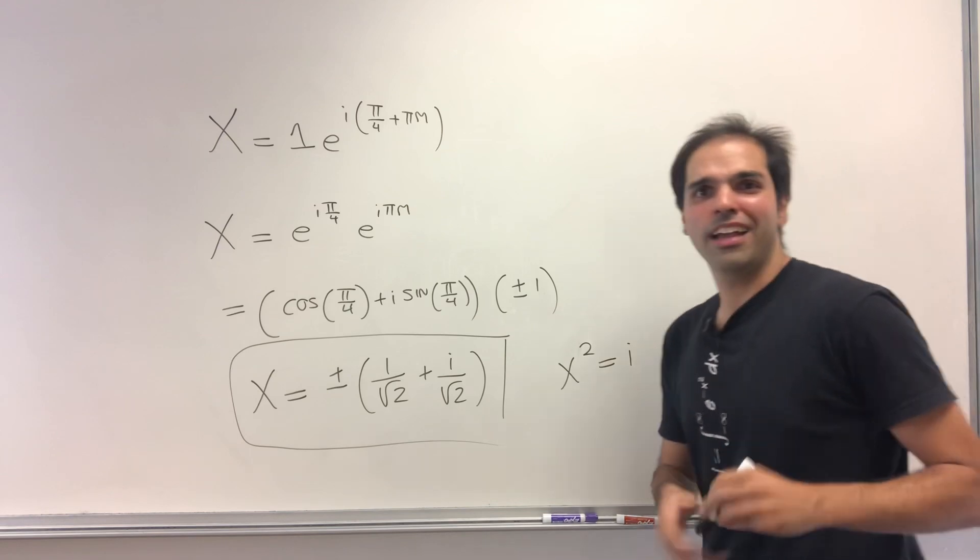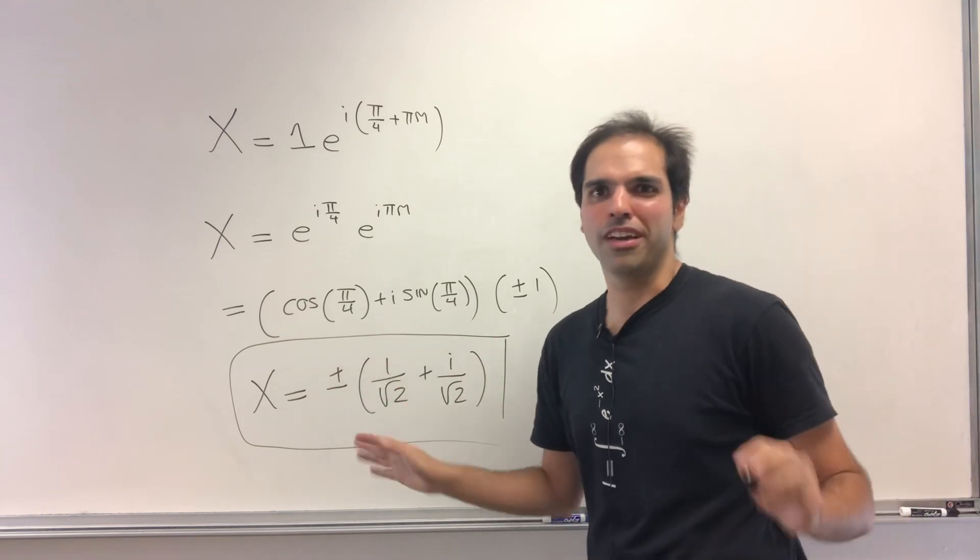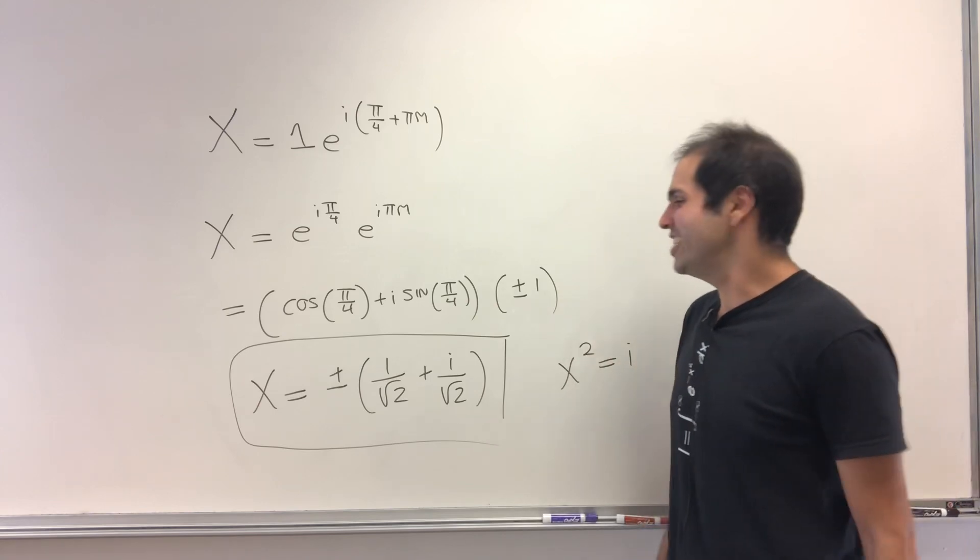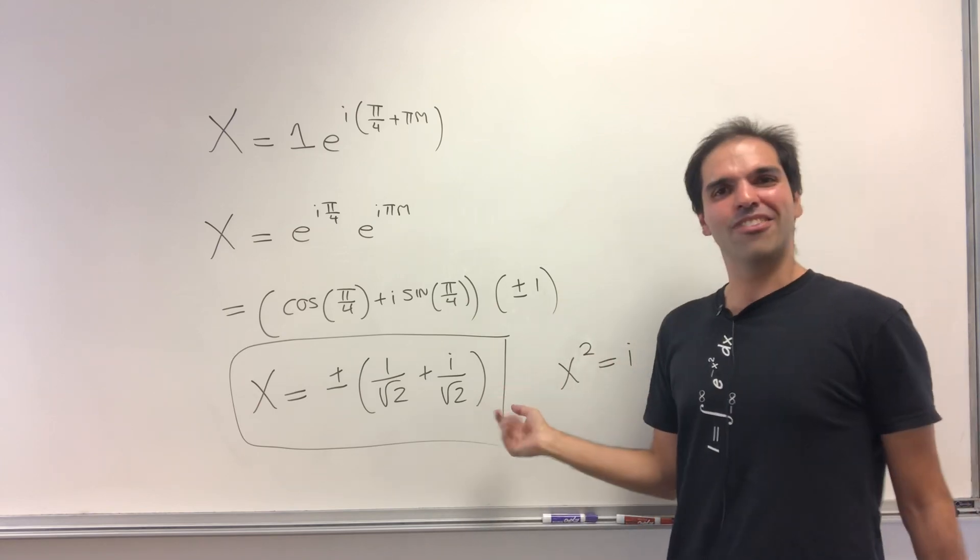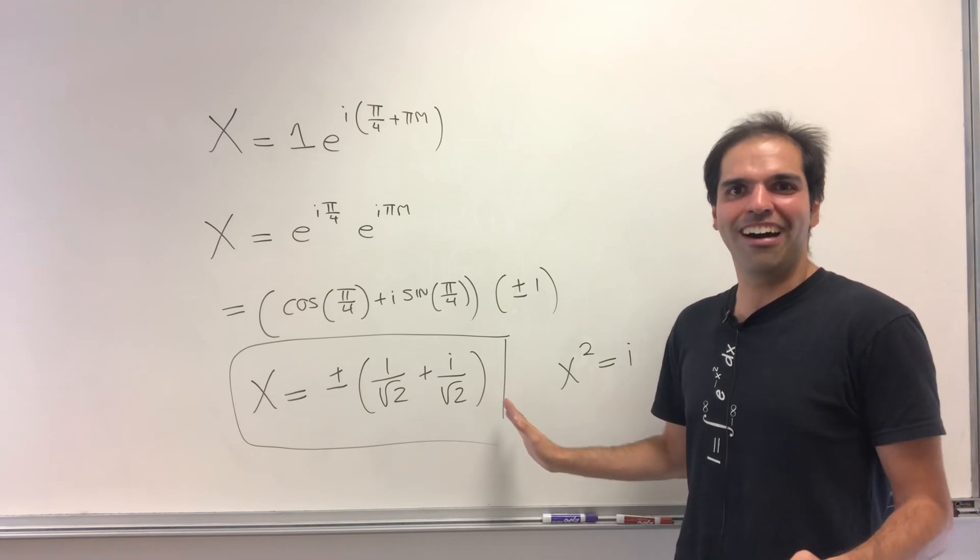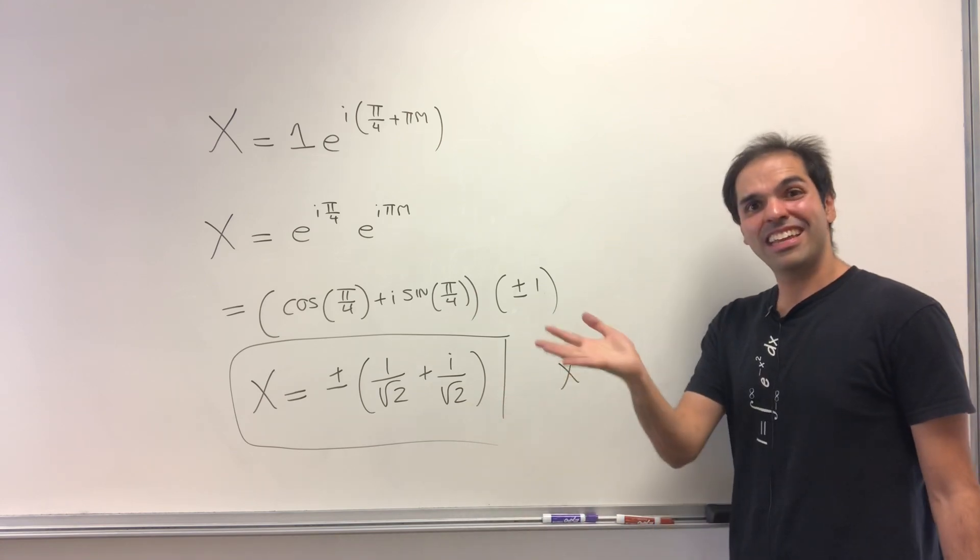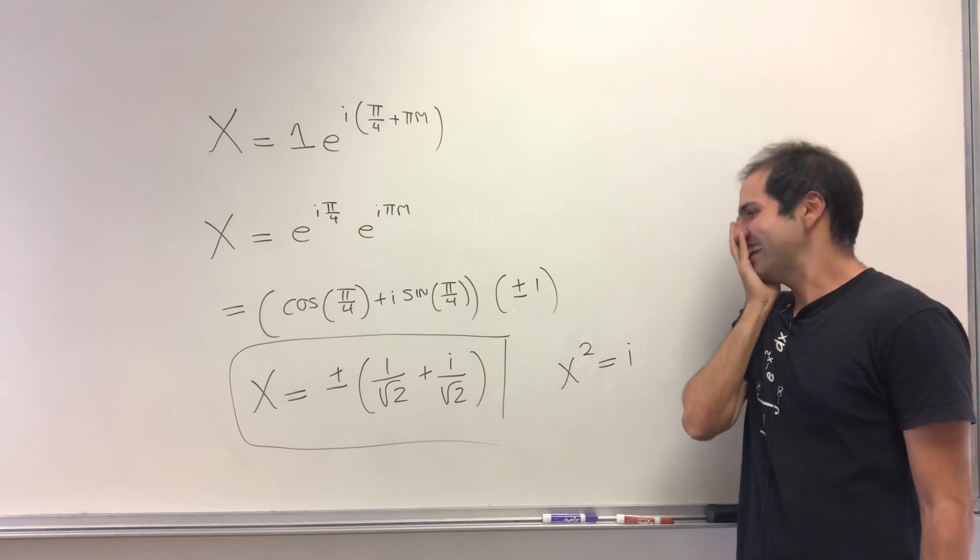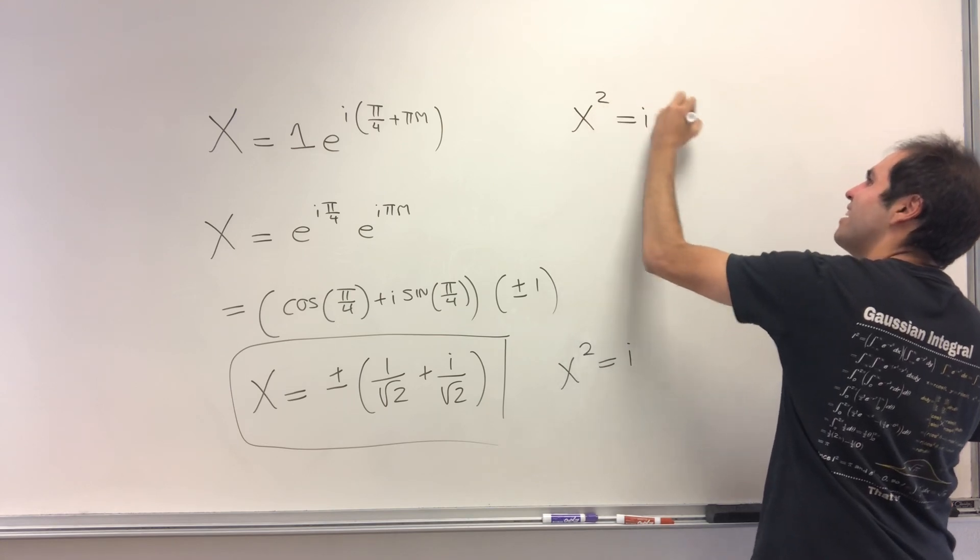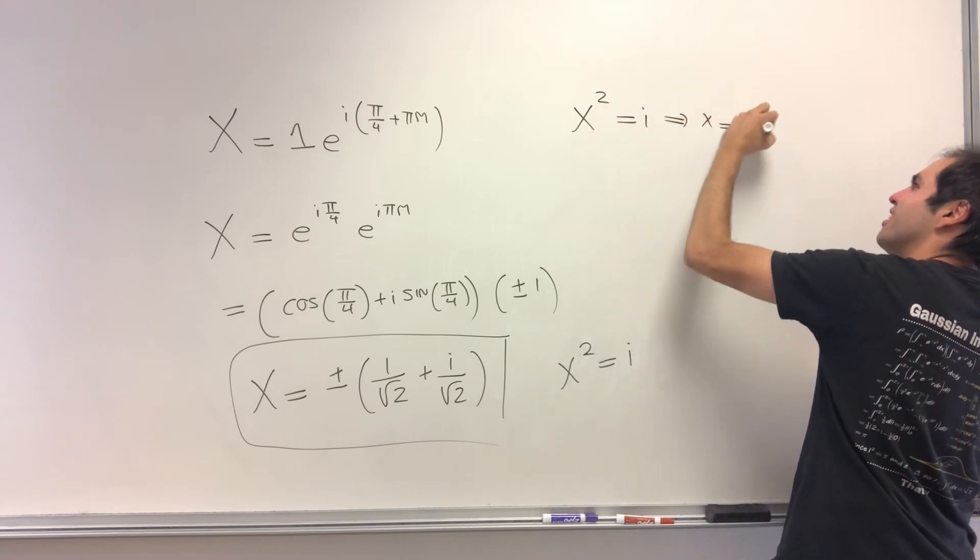And then I did this problem. I was like, oh, I'm so clever. I've come up with this new cool equation. And then I solved this, and I was like, wait a moment. Why does that look just like square root of i? And then I realized, oh my God. If x² equals i, of course, x is ±√i.